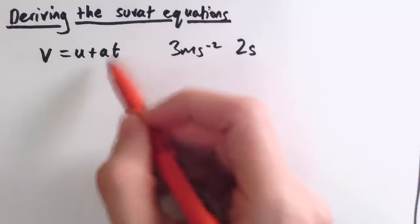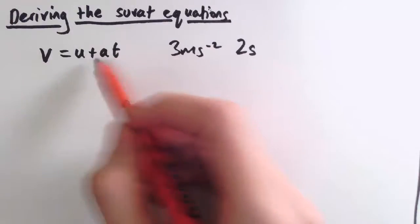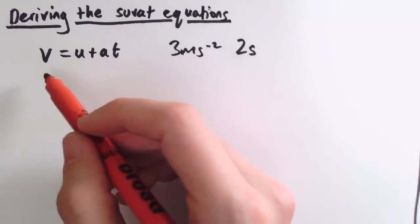So a times t here is the increase in the velocity, and that takes us from u, the initial velocity. You add that on and you get to v, which is the final velocity.